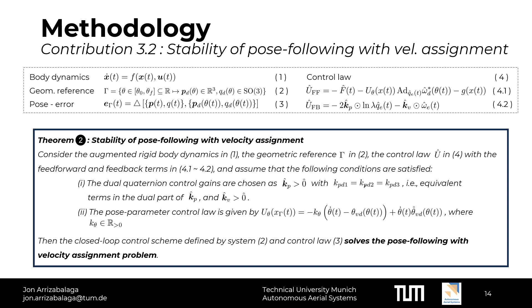The theorem ensuring stability for the pose-following with velocity assignment problem is the same as the first one except for the second condition. In this case, the feedback term is required to have the form of the equation highlighted in yellow. This will ensure that the parametric variable's speed will converge to the desired velocity profile.